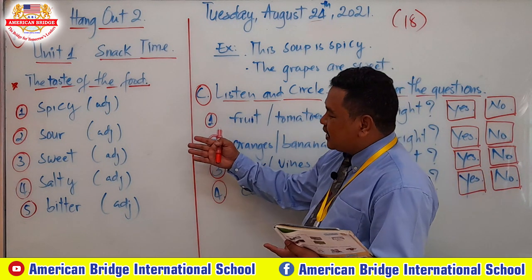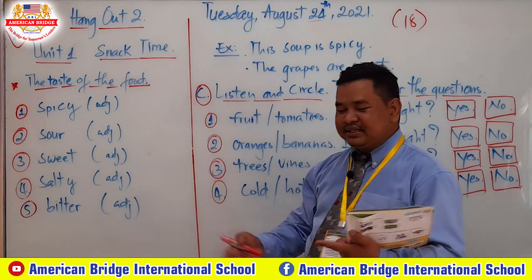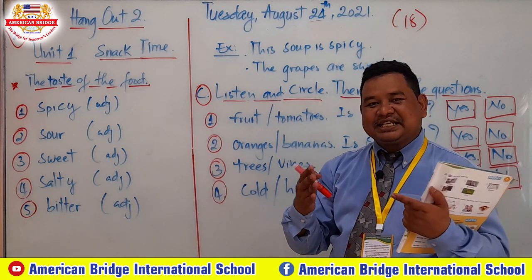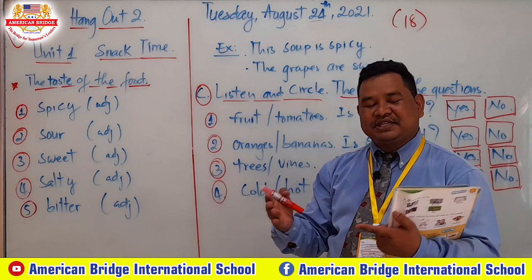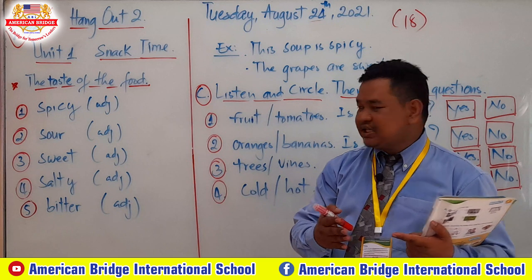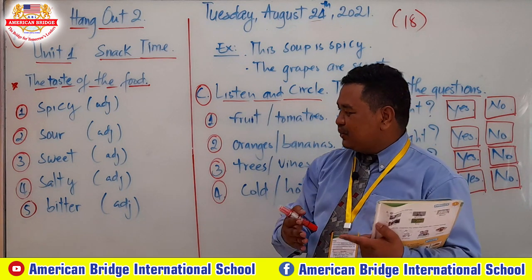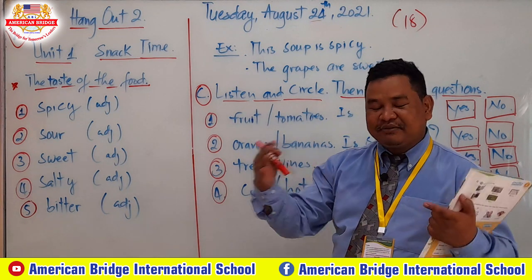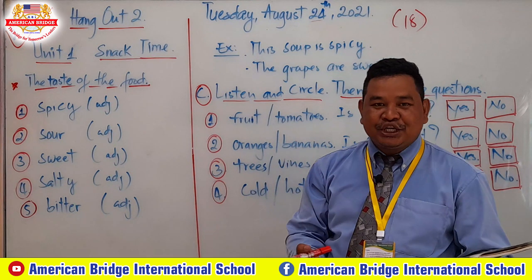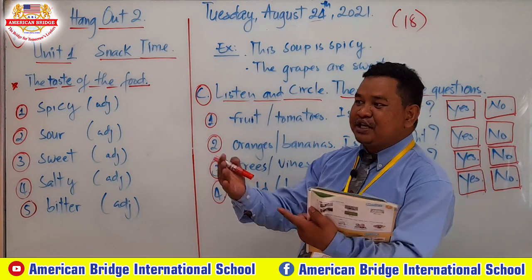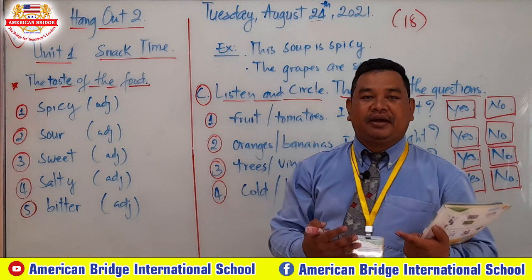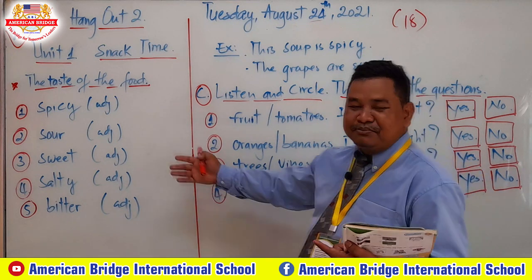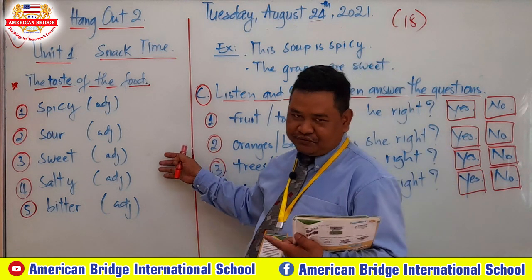When you tell someone, like: I don't want to eat spicy food, I want to eat something sweet or a bit salty — they will make it for you when you go to a restaurant, or when you tell your parents. So this vocabulary is very important for you.